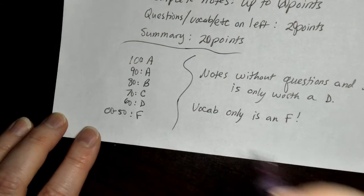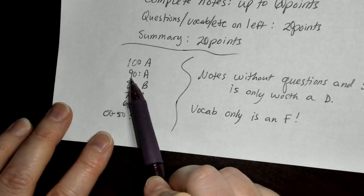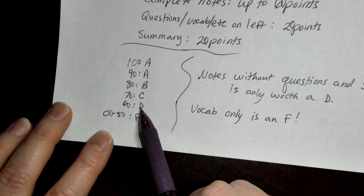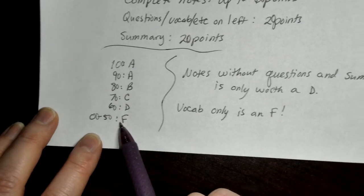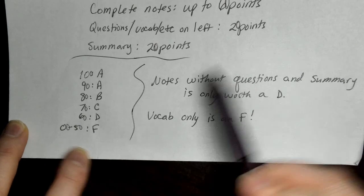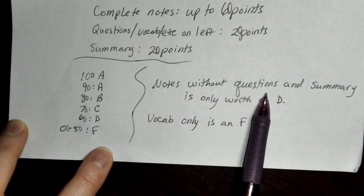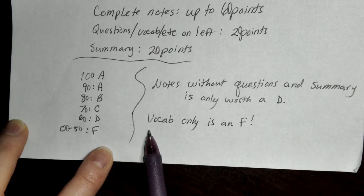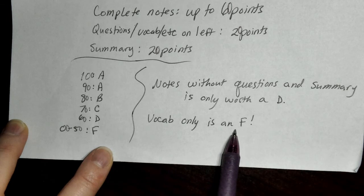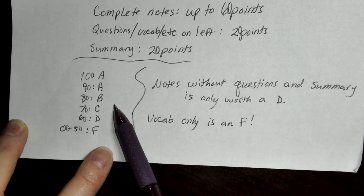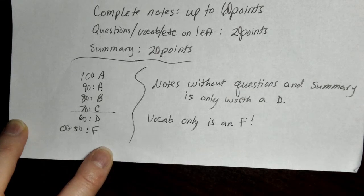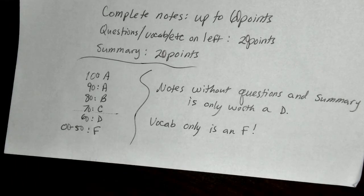These are out of 100% now. So 100% is an A, 90 is also an A, 80% is a B, 70% is a C, 60 is a D, 50% or lower is an F. If you only take the notes without questions and without a summary, it is only worth a D. If you only do the vocabulary, it is an F. In order to get a C or better, you need to take the whole entire set of notes, include questions, and include a summary.